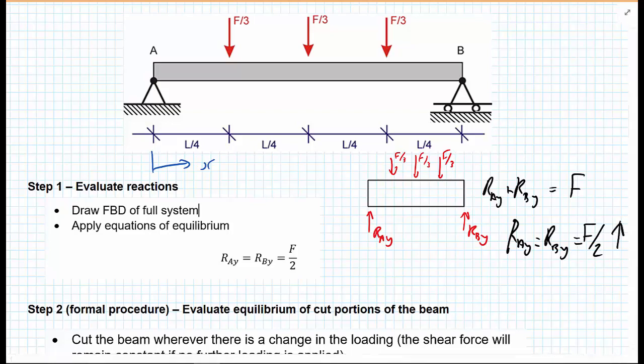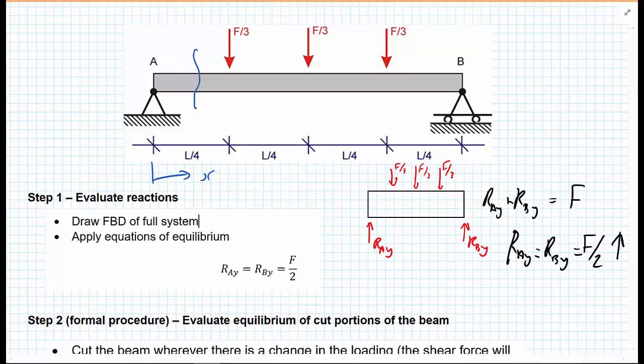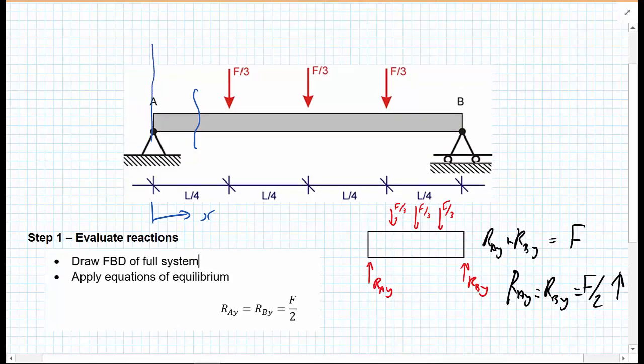So now that we have the reaction forces, we can proceed to calculate the shear force diagram. In the previous video, we showed what we need to do is make cuts. And we make cuts everywhere in positions where the shear force changes dramatically. So we need to make a cut between A and L upon 4, we'd need to make a cut between L upon 4 and L upon 2, we'd need to make a cut between L upon 2 and 3L upon 4, and finally in this last portion of beam, make a cut between 3L upon 4 and L. So we would have to make 4 cuts.